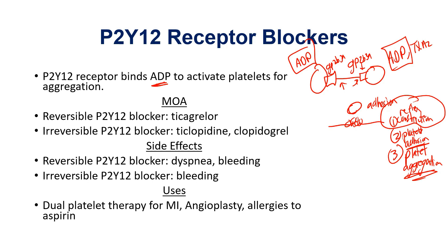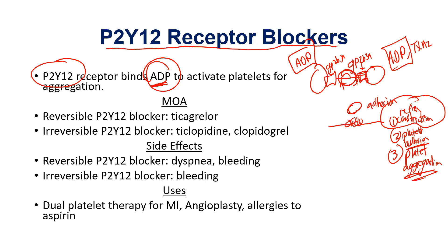So we're talking now about ADP. The P2Y12 receptor binds ADP. Before ADP can activate the platelet and help express GP2B3A — which binds fibrinogen in the middle to cross-link two platelet molecules — the platelet needs to be activated via P2Y12 binding ADP. That tells us we can stop platelet aggregation and platelet activation by inhibiting P2Y12.